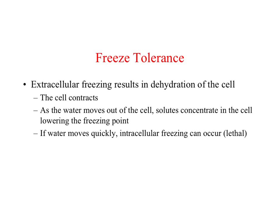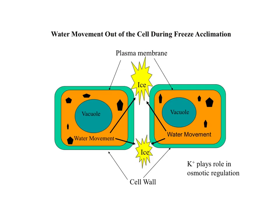The water that has moved out of the cell will freeze in the presence of sub-freezing temperatures. If water were to rapidly freeze within the cell, death would occur. This is a pictorial representation of the water moving out of the cells and freezing in the intercellular spaces. As ice crystals form, more water is pulled out of the cell because of the water potential gradient that forms.